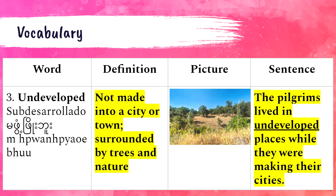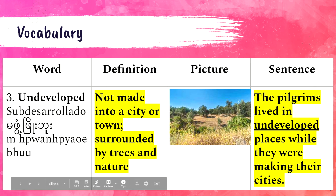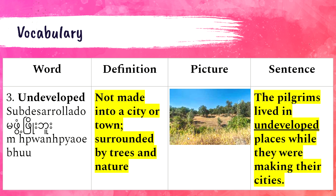Number three, the word is 'undeveloped.' Undeveloped can have a lot of meanings, but the meaning we're going to use in the story is: not made into a city or town, surrounded by trees and nature. You see the picture of an undeveloped piece of land — there are no roads, no pavement, lots of trees and grass. That's what undeveloped means. My example: the pilgrims lived in undeveloped places while they were making their cities — places out in nature where there weren't a lot of towns.